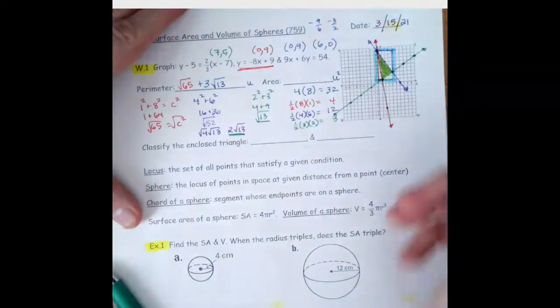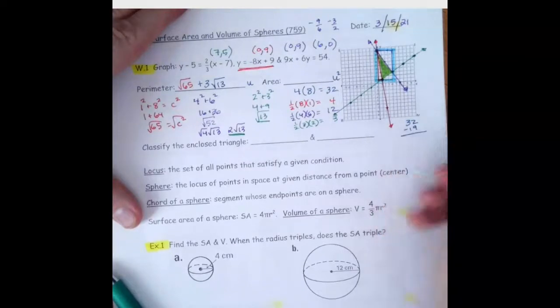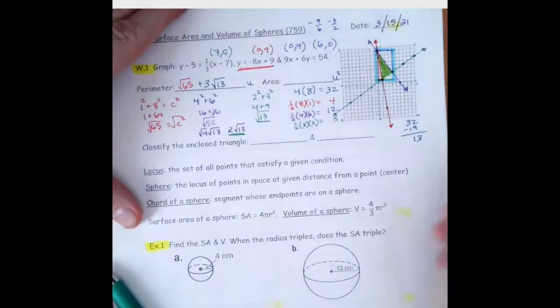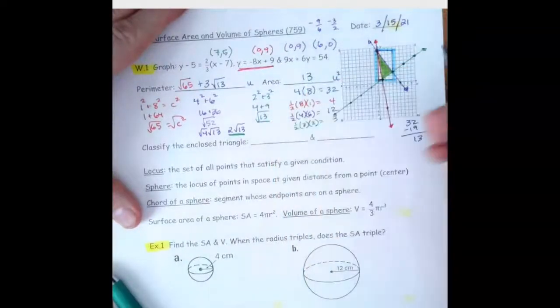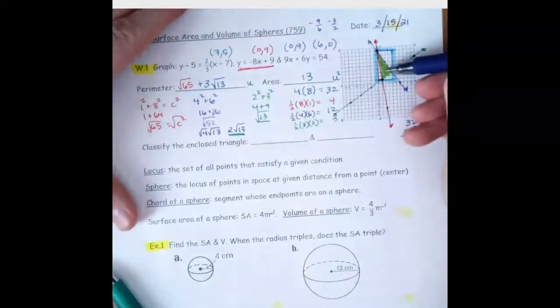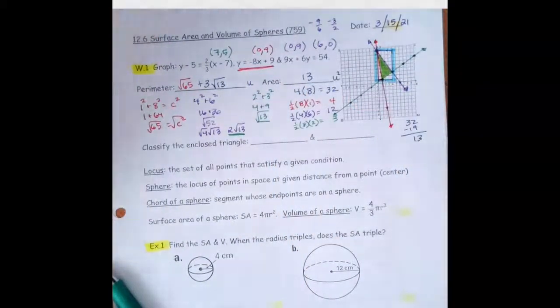So 32 minus 19 is 13. The area of the green triangle is 13 square units.